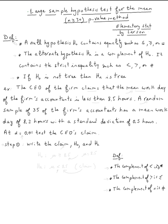A null hypothesis h sub zero contains equality such as less or equal, bigger or equal, or equal. The alternate hypothesis h sub a is a complement of h sub zero. It contains the strict inequality such as strictly less, strictly bigger, or not equal.